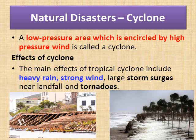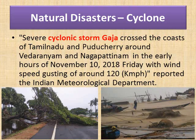The main effects of a tropical cyclone include heavy rain, strong wind, large storm surges near landfall, and tornadoes. Cyclone Gaja crossed the coast of Tamil Nadu and Puducherry around Vedaranyam and Nagapattinam in the early hours of November 10, 2018 (Friday), with wind speeds gusting around 120 kilometers per hour, as reported by the Indian Meteorological Department.